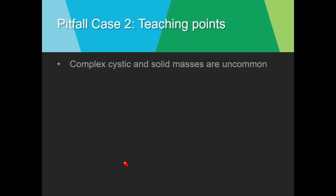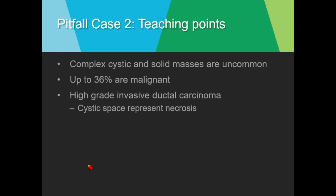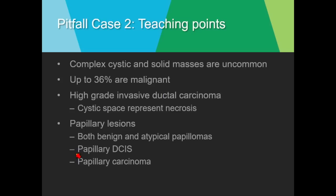Complex cystic and solid masses are fairly uncommon; however, more than a third can be malignant. When malignant, they can be high-grade invasive ductal carcinoma — the cystic spaces representing necrosis — and they may also be papillary lesions: benign papillomas, atypical papillomas, papillary DCIS, or papillary carcinoma.